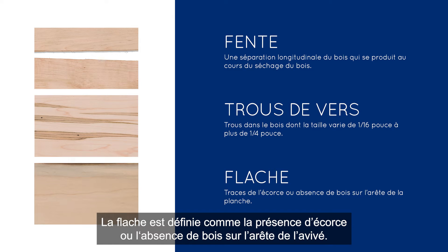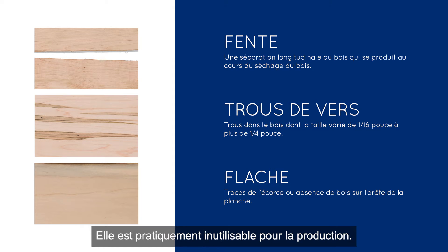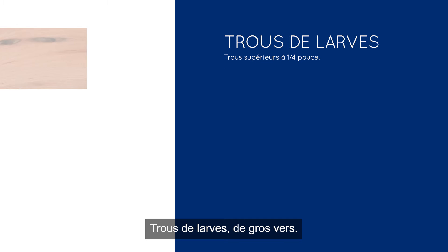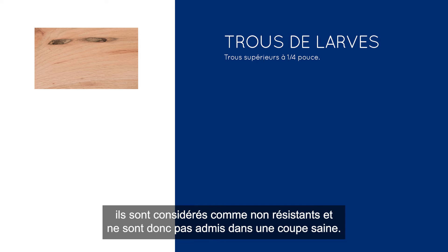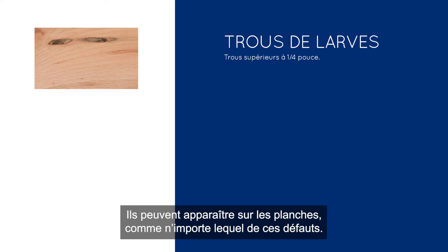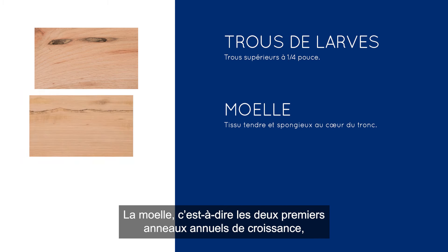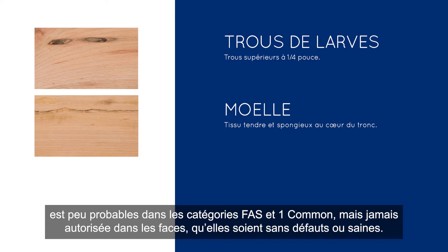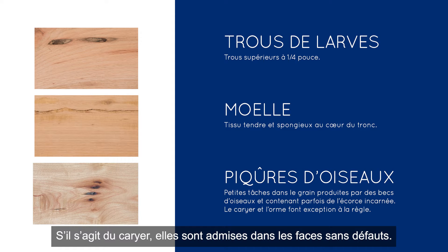Wane — bark or lack of wood — is never allowed in a clear or sound cutting; it's pretty much useless for production. Grub holes are really large worm holes; if larger than a quarter to half inch in average diameter, they're considered unsound and wouldn't be in a sound cutting. Pith — the first couple of annual rings of growth — is limited on FAS and 1 Common, and never allowed in a cutting, clear or sound. Bird pecks: in hickory they're allowed in a clear-faced cutting, but in most other species they're considered unsound.